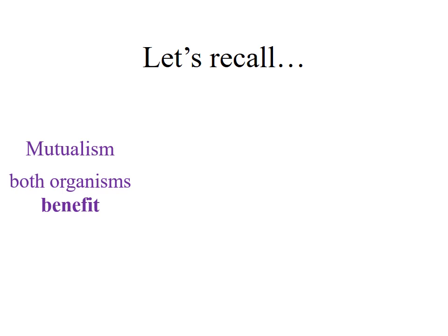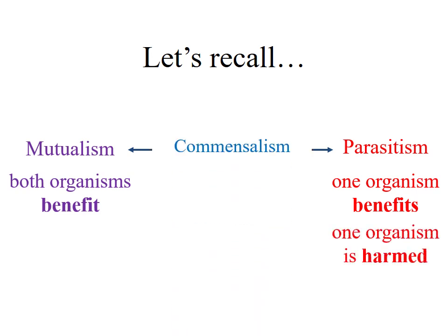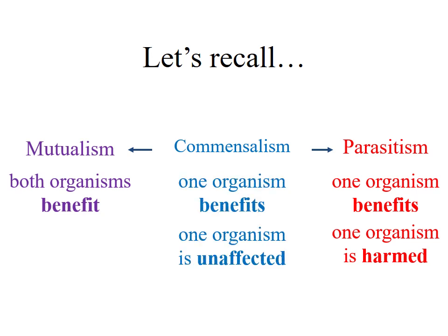Let's review. Mutualism — you see the letter T, which is a plus sign; both organisms get something good, plus-plus. Parasitism involves parasites that steal from the host: the parasite benefits with a plus, and the host gets a negative — it's harmed — so plus-minus. In the middle we have commensalism. Notice the O in commensalism: one gets absolutely nothing, not helped or hurt, and the other gets something good — so plus and zero.